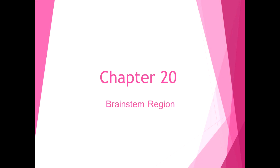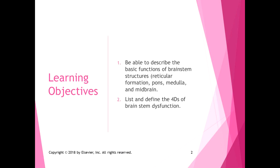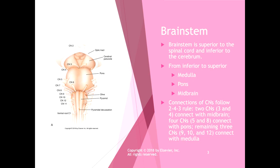Chapter 20 covers the brainstem region, and just like chapter 19 with the cranial nerves, there is a ton of information in the book that we are not going to go over. We're going to talk about the brainstem in terms of the basic function of its individual parts. For the learning objectives, I want you to be able to describe the basic functions of brainstem structures: the reticular formation, the pons, the medulla, and the midbrain. I also want you to be able to list and define what we call the four D's of brainstem dysfunction — it's handy that all the symptoms generally associated with brainstem dysfunction start with the letter D.